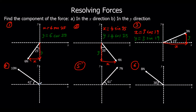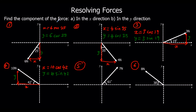Question 4: this time we've got x as the adjacent, so x equals 10 cos 42. Y is the opposite, so it's 10 sin 42. And x would be negative if you're taking positive and negative into account.